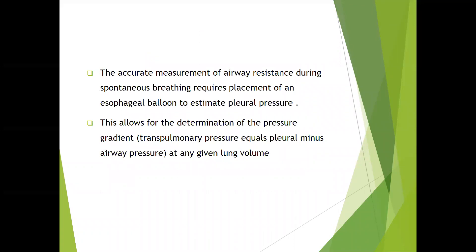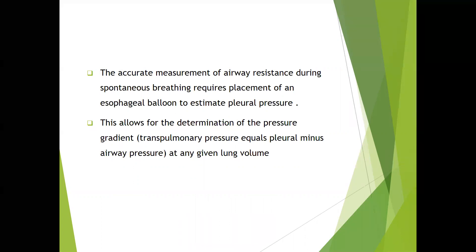Accurate measurement of airway resistance during spontaneous breathing requires placement of an esophageal balloon to estimate pleural pressure. This allows determination of the pressure gradient — trans-pulmonary pressure equals pleural pressure minus airway pressure — at any given lung volume. This is accomplished by measuring expiratory flow and correlating it to the pleural pressure.